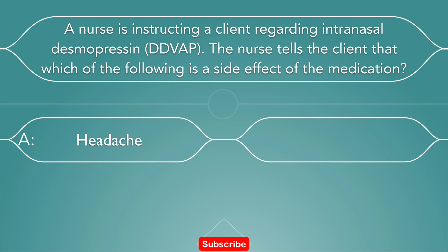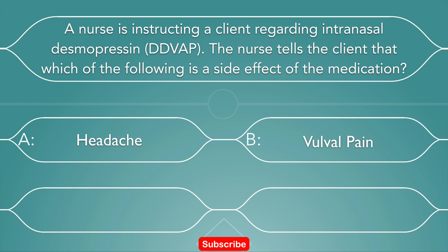Option A: headache. Option B: vulnerable pain. Option C: runny nose. Option D: flushed skin.